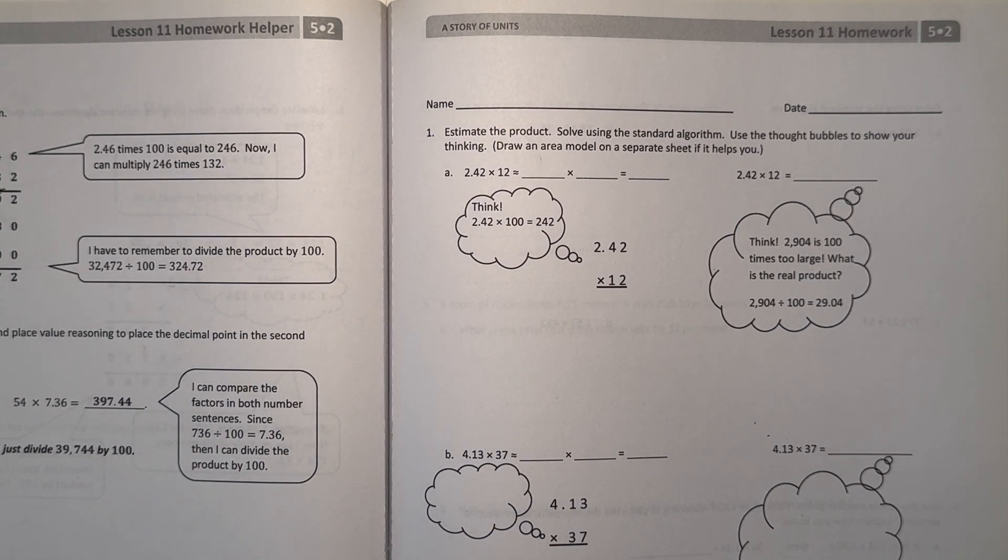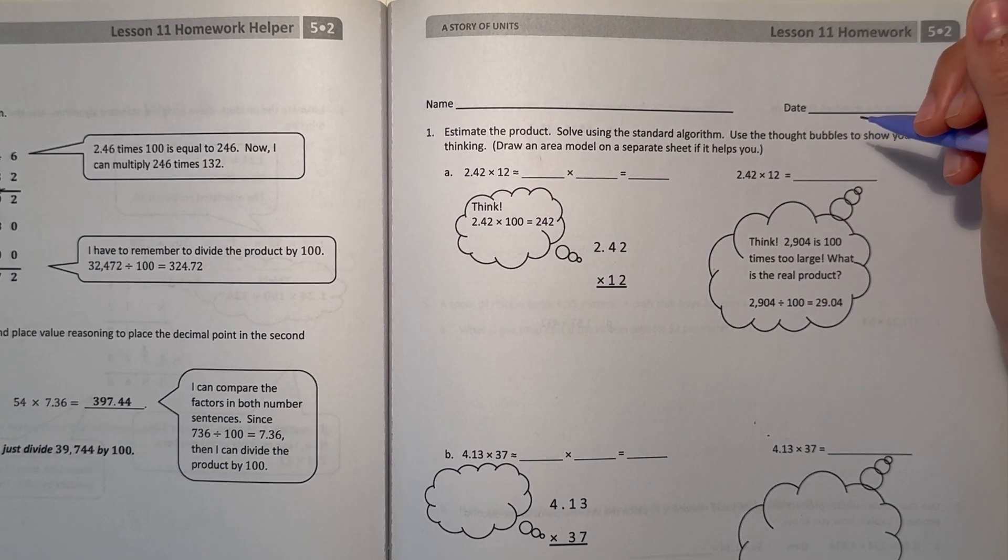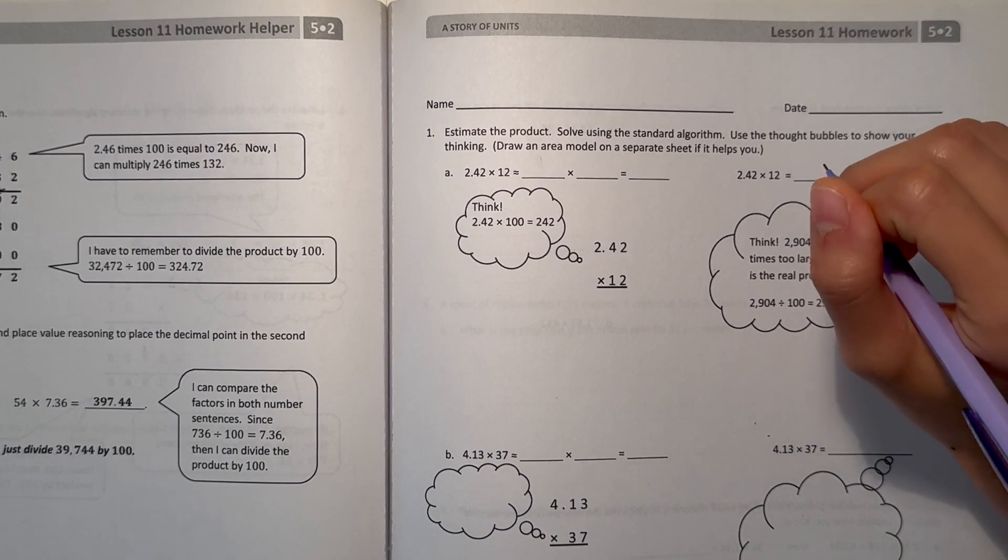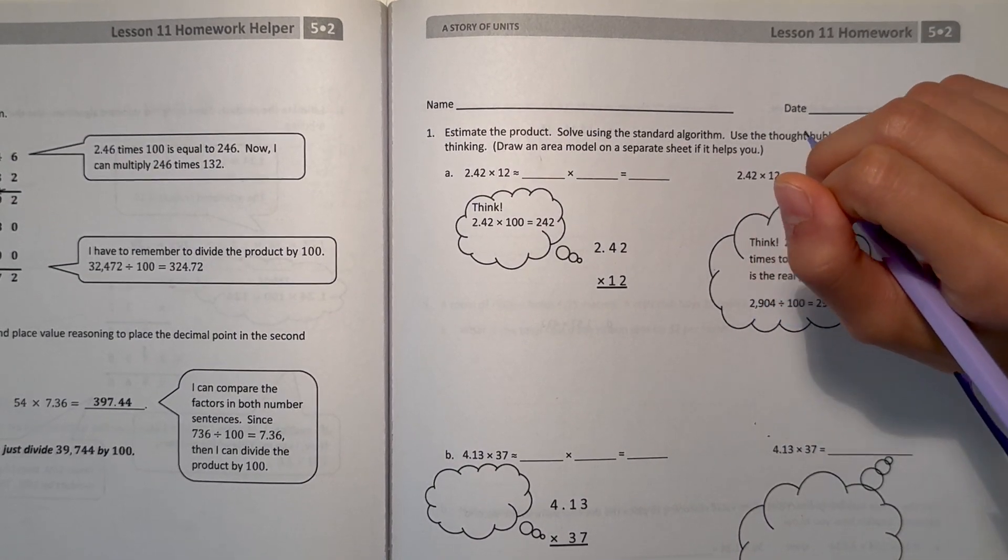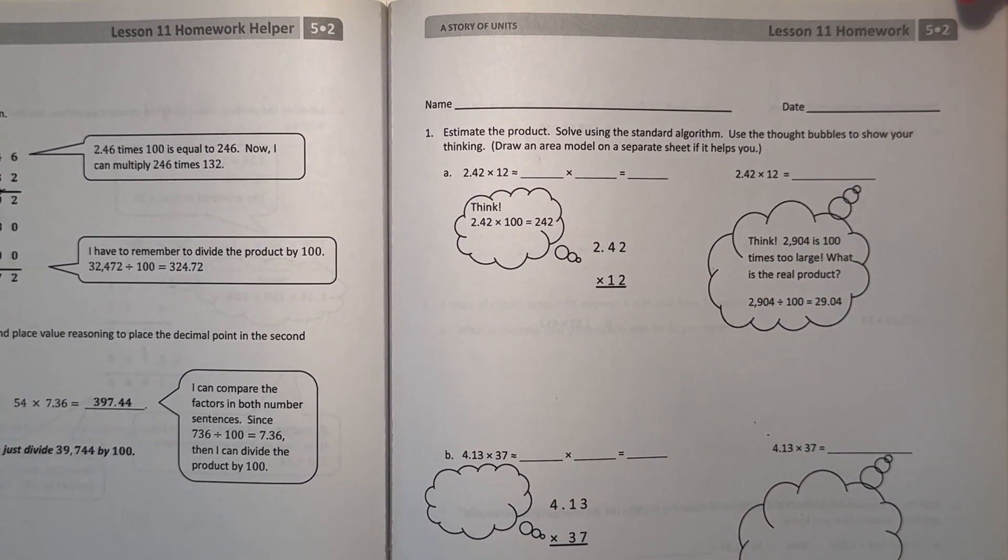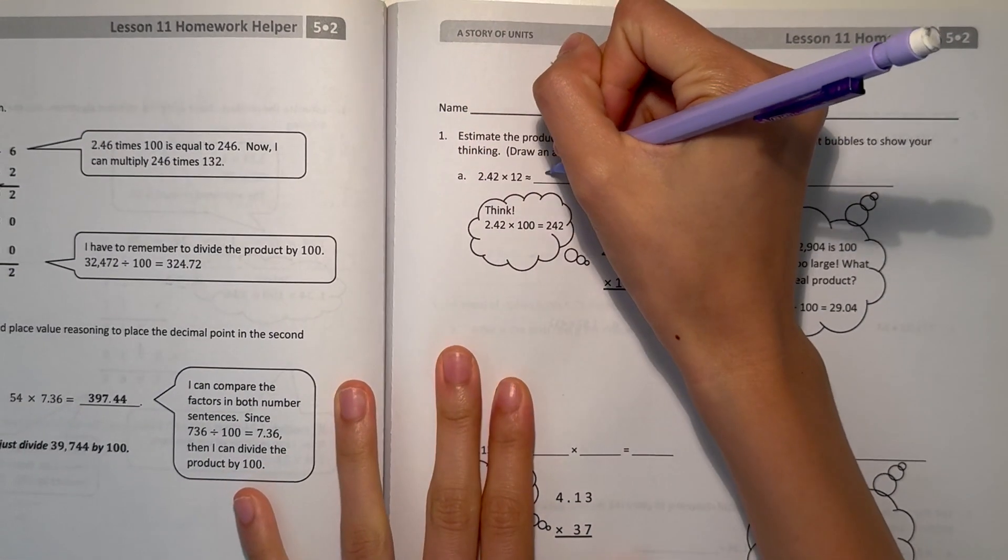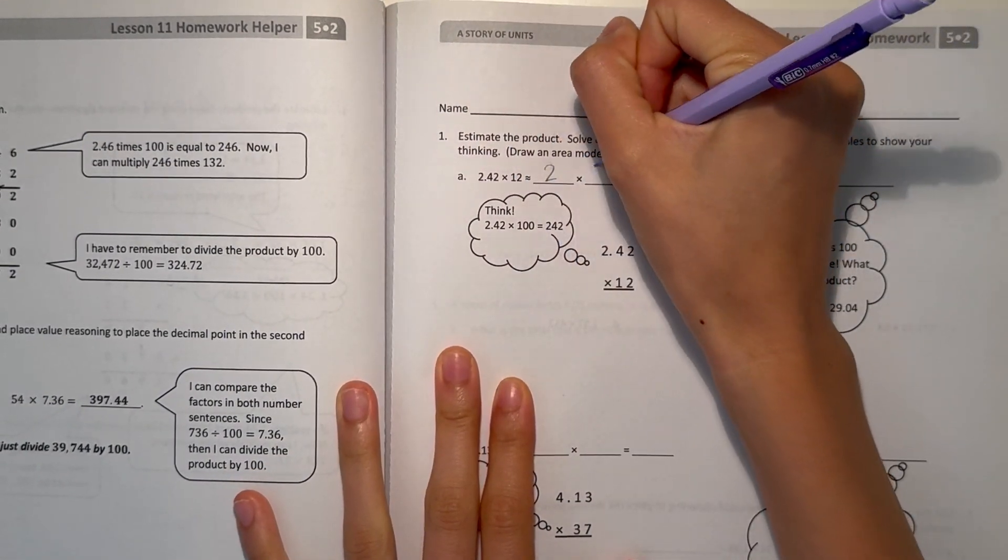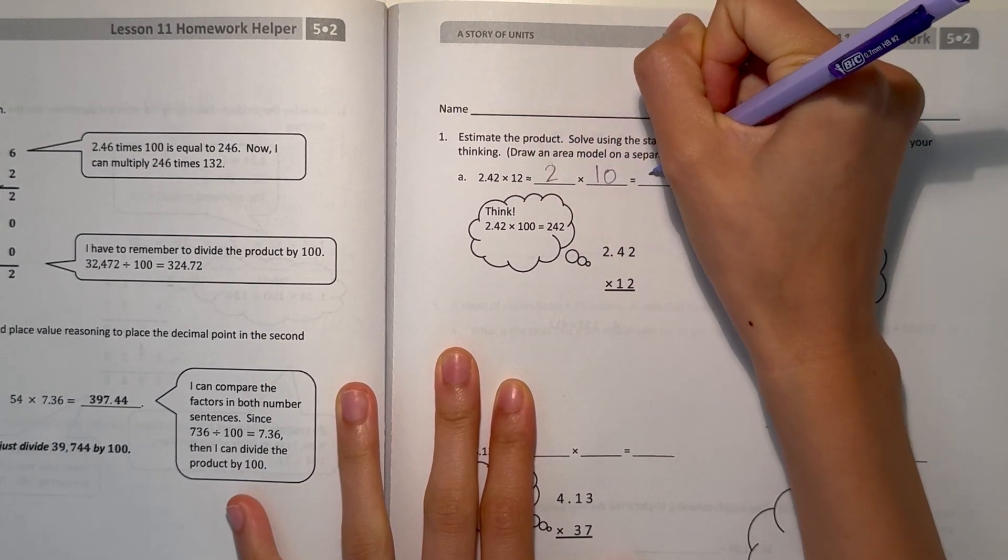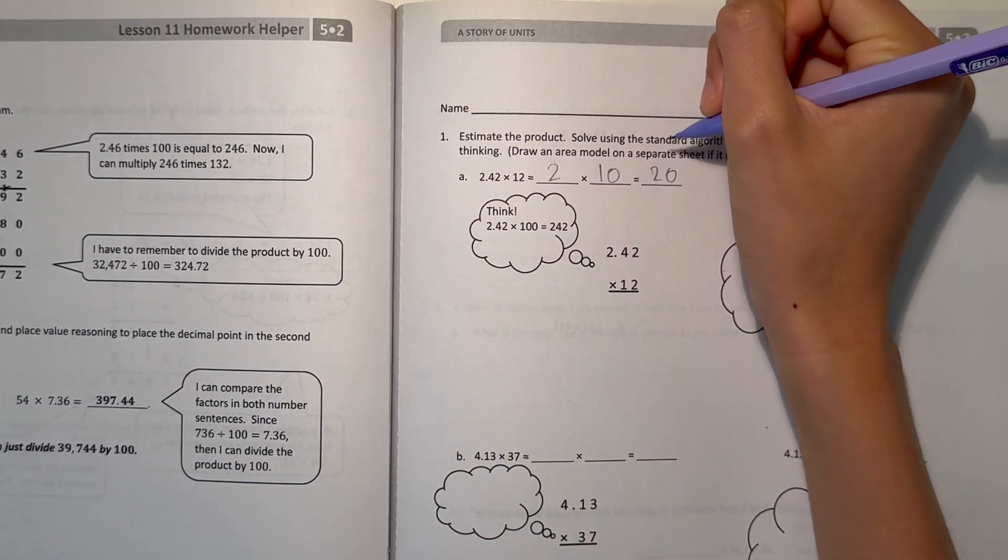Number one, estimate the product, solve using the standard algorithm, use the thought bubbles to show your thinking. For part A, we have 2.42 times 12. Let's start by estimating. 2.42 goes to 2 and 12 goes to 10. 2 times 10 is 20, so 20 is our estimate.